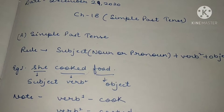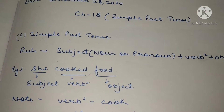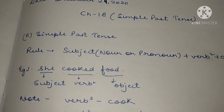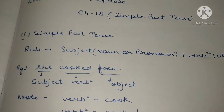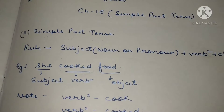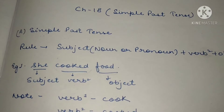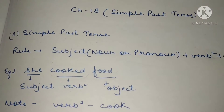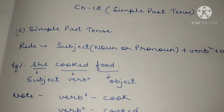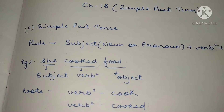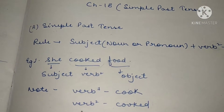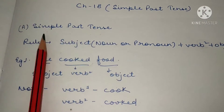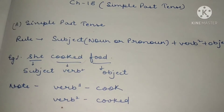First of all, what do you mean by past tense? Past means what you have done. Present is the work that is going on, the work that you are doing. Past means the work that has already been done — jo kaam already ho chuka hai, jo kaam aap kar chuke hain — that is your past tense.